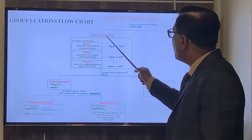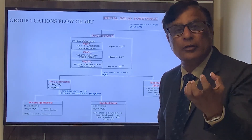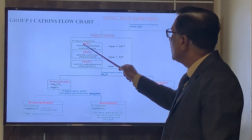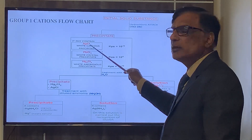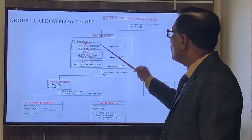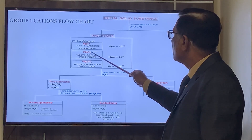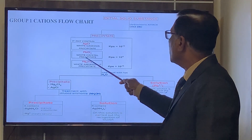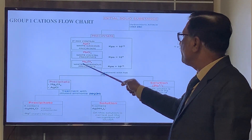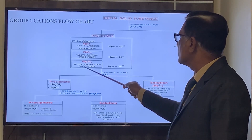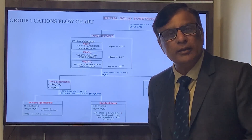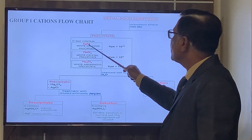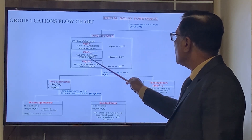If we have precipitates on the filter paper, then precipitates may be AgCl — silver chloride, which is a white caseous precipitate — or PbCl₂, lead chloride, which appears as white crystals. If the precipitates are white amorphous, then mercury chloride (HgCl₂) may be present. So precipitates may be of AgCl, PbCl₂, or HgCl₂.